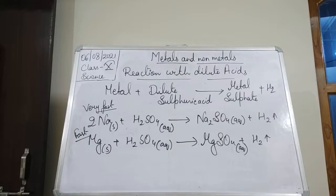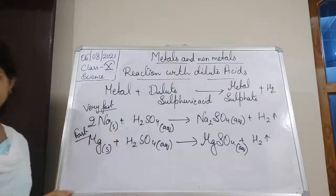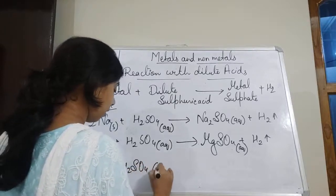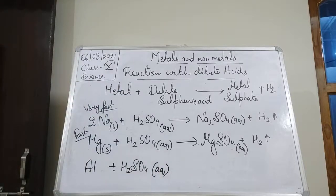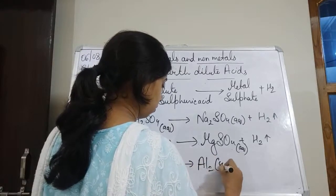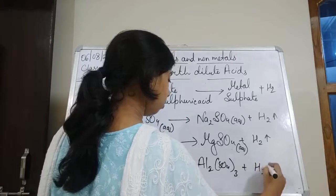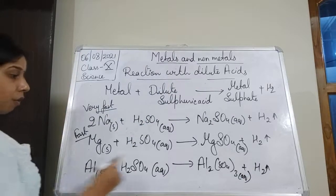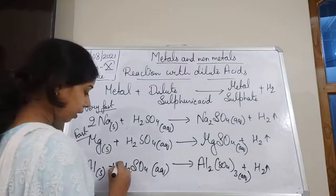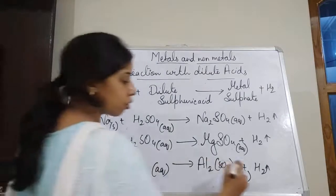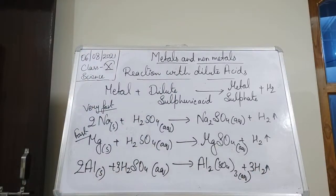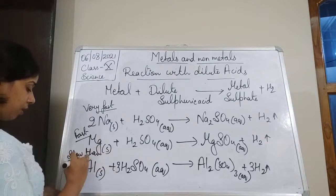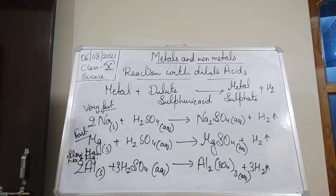For aluminium, it is less reactive than sodium and magnesium. Aluminium reacts with H₂SO₄ to form aluminium sulfate Al₂(SO₄)₃. Balancing: aluminium is balanced, sulfate gives 3 on each side, and we write 3H₂ to balance hydrogen. The reaction of aluminium with sulfuric acid is slower than that of sodium and magnesium.